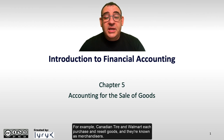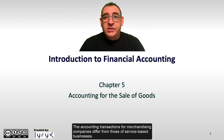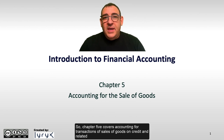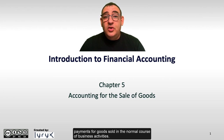For example, Canadian Tire and Walmart each purchase and resell goods and they're known as merchandisers. The accounting transactions from merchandising companies differ from those of service-based businesses. Chapter 5 covers accounting for transactions of sales of goods on credit and related cash transactions by merchandising firms, as well as transactions involving purchases and payments for goods sold in the normal course of business activities.